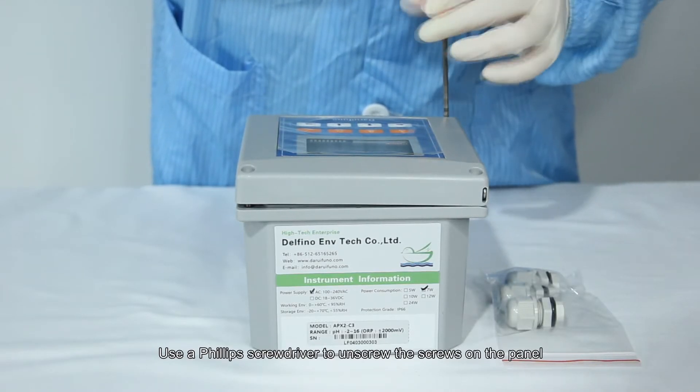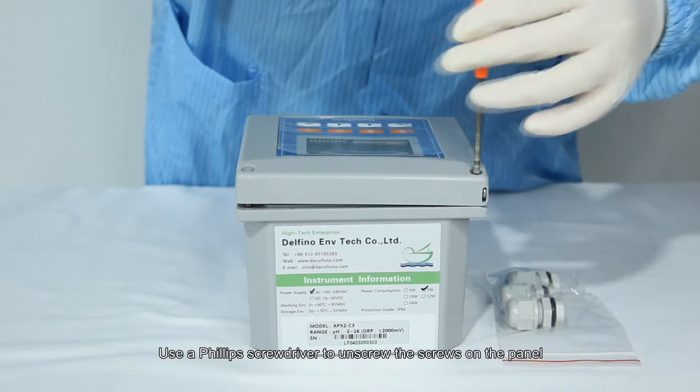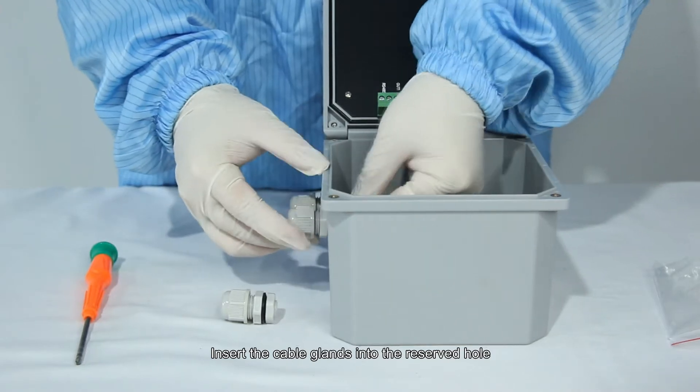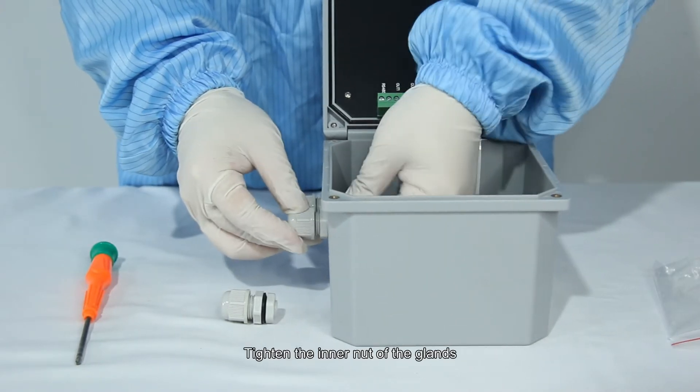Use a Phillips screwdriver to unscrew the screws on the panel. Take out the cable glands. Insert the cable glands into the reserved hole. Tighten the inner nut of the glands.